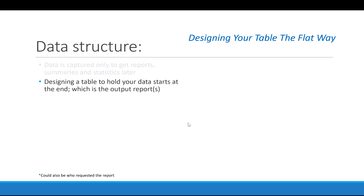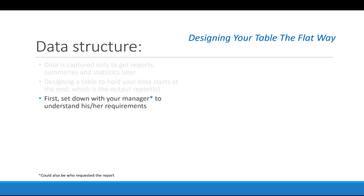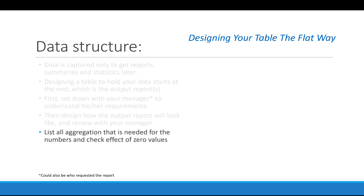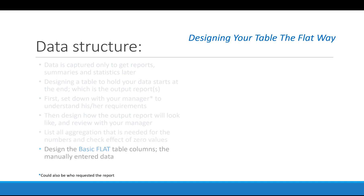In order to design your output report, you need to sit down with your manager first and understand their requirements. Your manager is your customer — you need to have that empathy, that understanding, to feel what they want and how they're going to use it. After that, design your output reports and show your initial concept to your manager to confirm the direction. You also need to list all the aggregations needed and check the effect of zero values, since average and minimum are mostly affected by zeros.